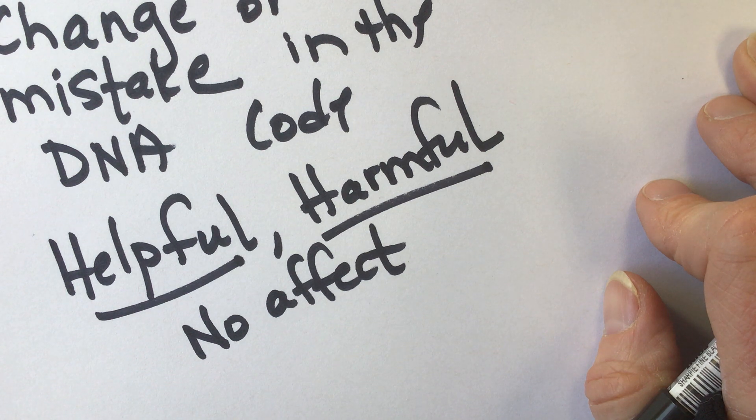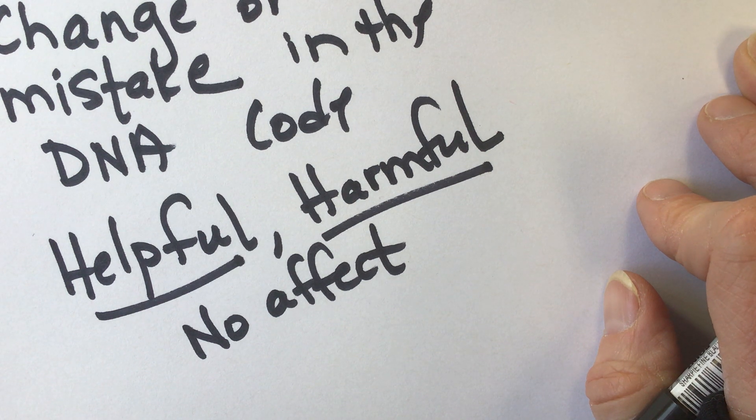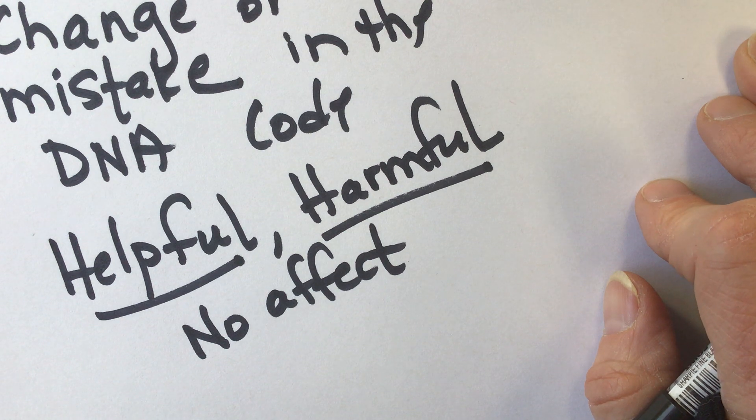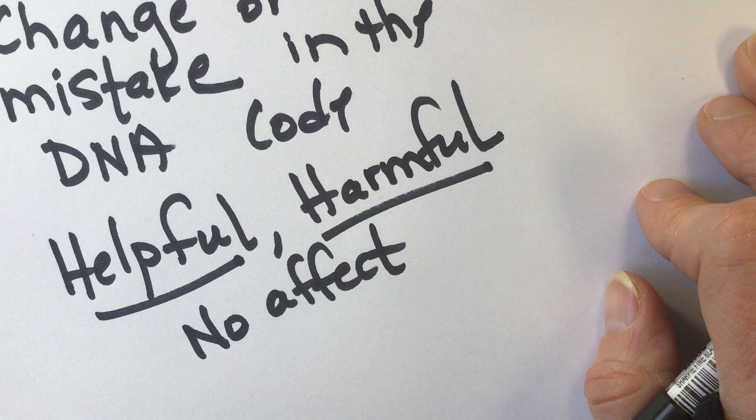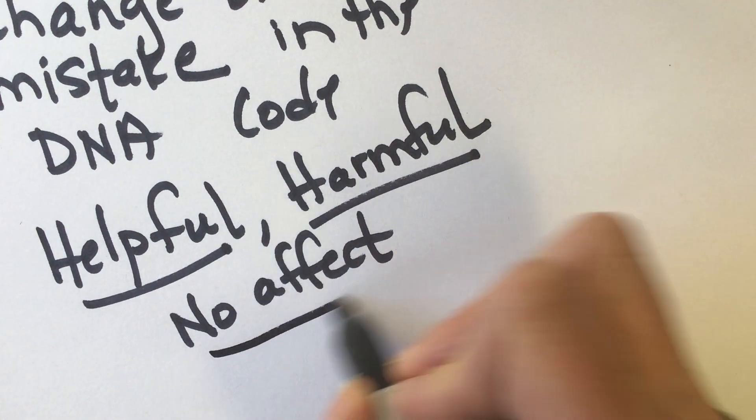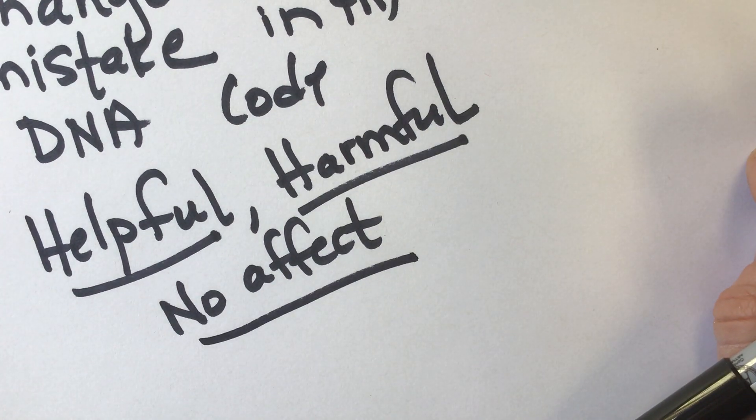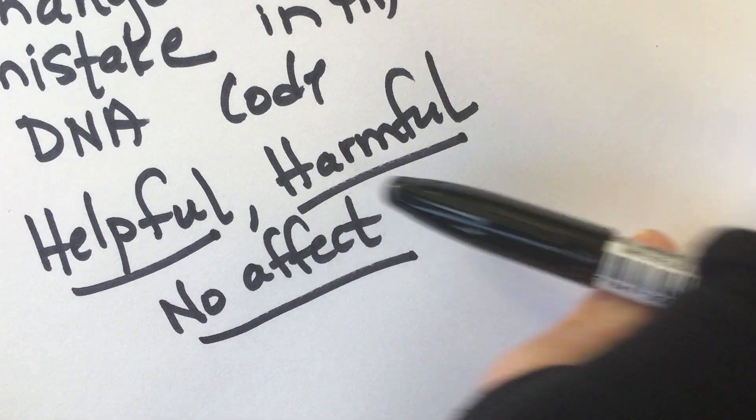Harmful might be a disease, so it changes, like there's a disease called progeria, where a one-letter base change makes a different protein, and that protein causes people to age faster. Or that mutation might happen, and nothing happens at all. We don't ever even know it's there. So that's one example.